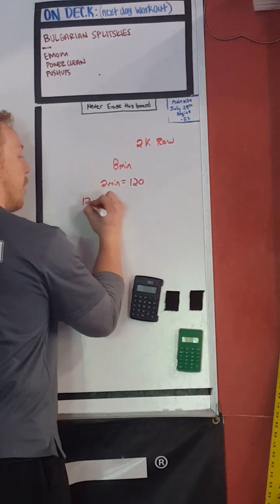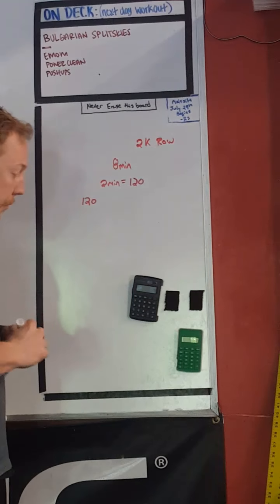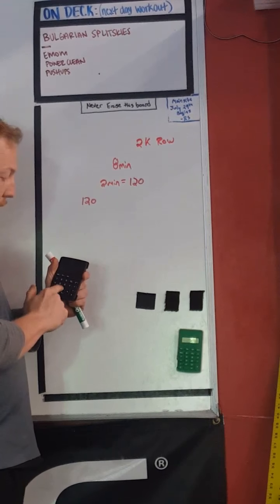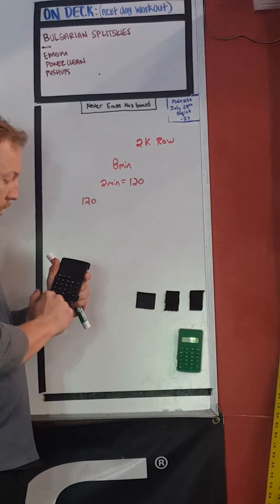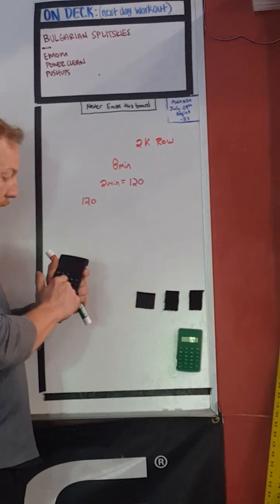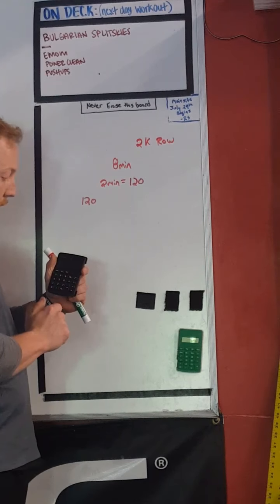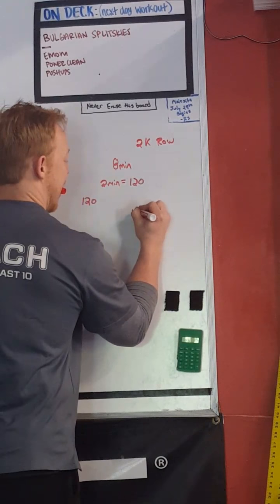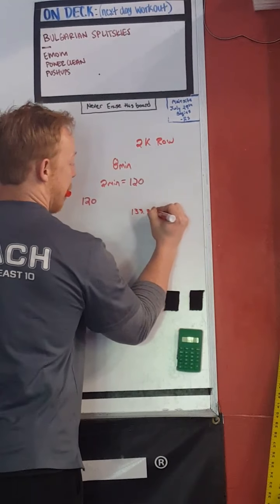We take our 120 seconds with our calculator. We put 120 in, divided by 0.90, comes out to numbers like one three three repeating.